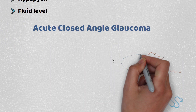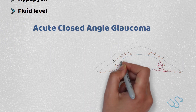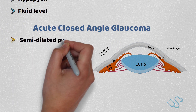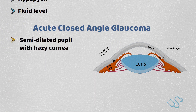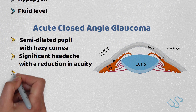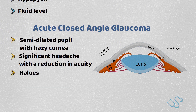Acute closed angle glaucoma — I'm going to produce a longer video on this specifically, but acute glaucoma is where there's essentially a semi-dilated pupil with a hazy cornea, simply because of an increased intraocular pressure. Patients often complain of a significant headache with reduced acuity and halos in the vision. I'll put the link to that video down below.